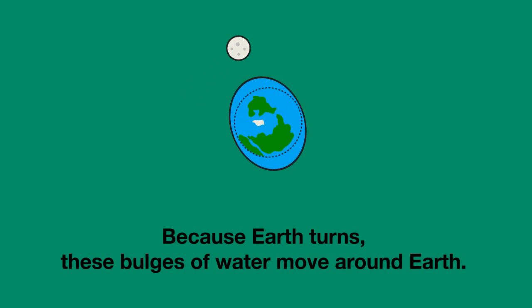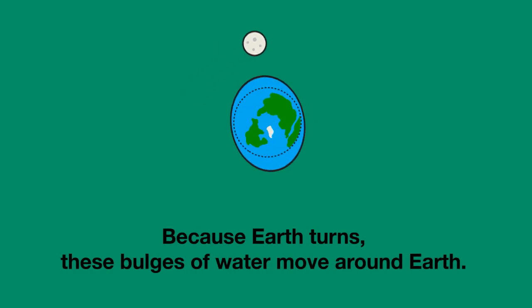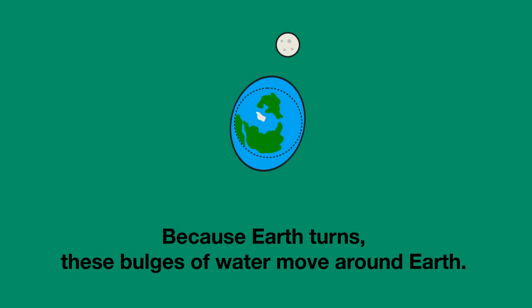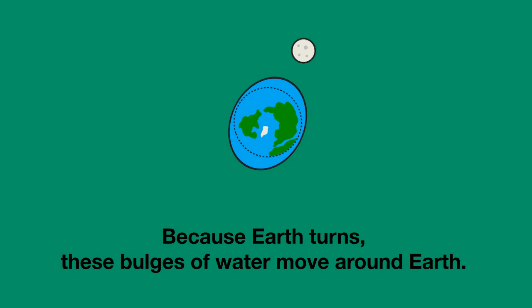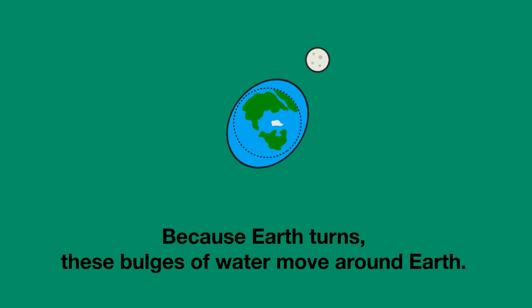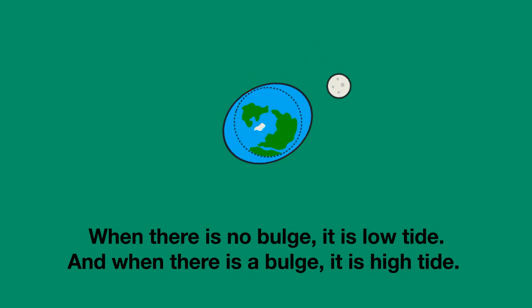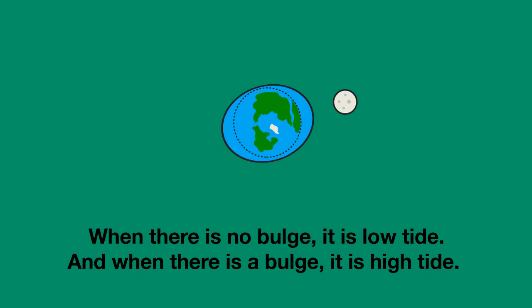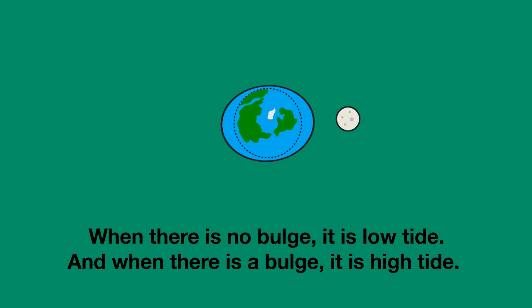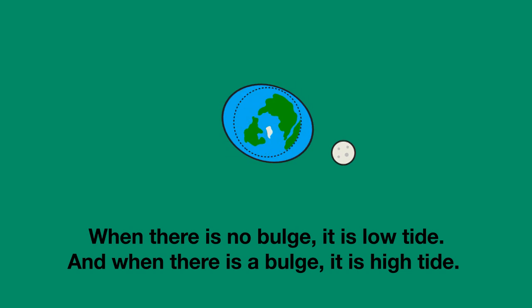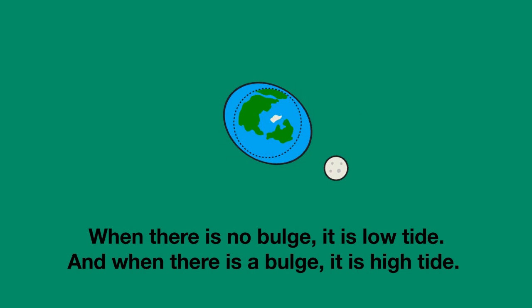Because Earth turns, these bulges of water move around Earth — or rather, Earth moves underneath them. When there's no bulge, it's low tide. And when there is a bulge, it's high tide.